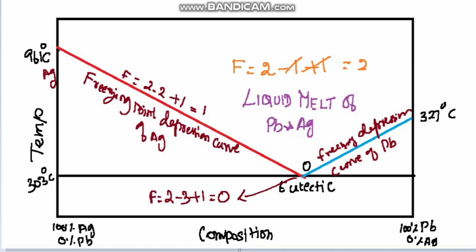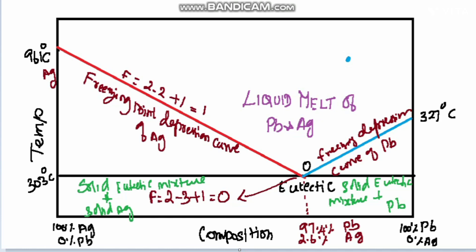The composition of the eutectic mixture consists of 97.4% lead and 2.6% silver. The melting point of this eutectic mixture is 303°C. The eutectic mixture has a constant melting point of 303°C. Below this area, solid eutectic mixture and solid silver exist on the right-hand side, while solid eutectic mixture and solid lead exist on the left-hand side.